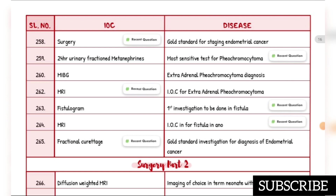Most sensitive test for pheochromocytoma is 24-hour urine fractionated metanephrines. Extra-adrenal pheochromocytoma diagnosis: MIBG scan. Investigation of choice for extra-adrenal pheochromocytoma is MRI. First investigation to be done in fistula is fistulogram. Investigation of choice for fistula-in-ano is MRI. Gold standard investigation for diagnosis of endometrial cancer is fractional curettage.